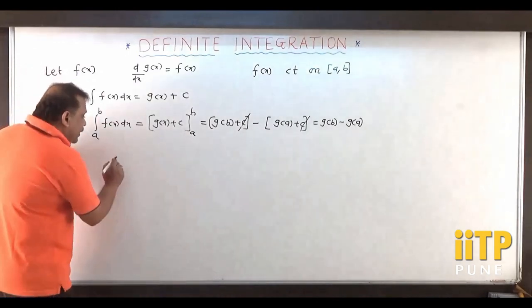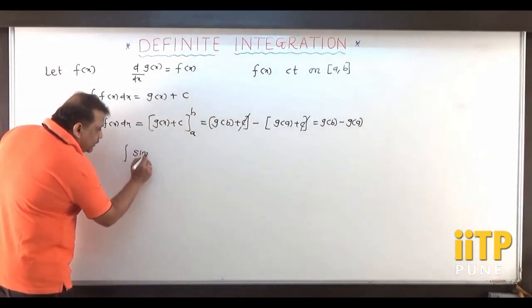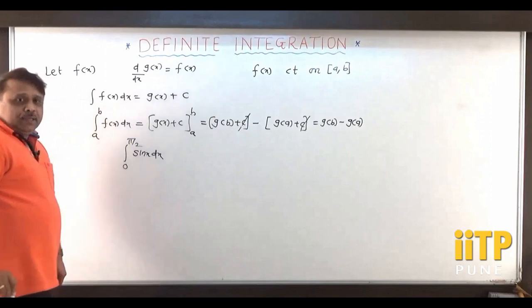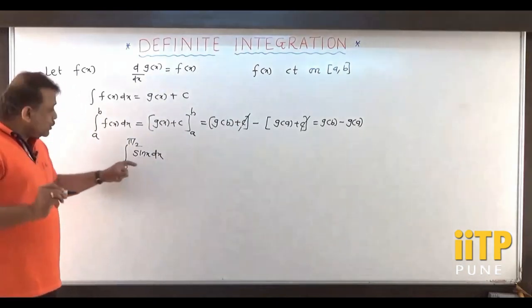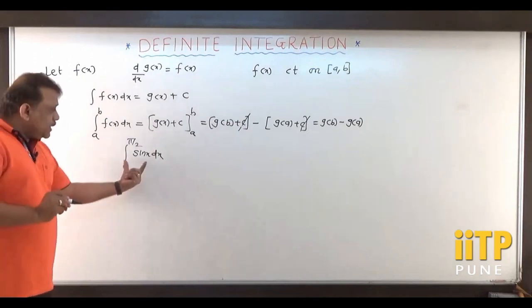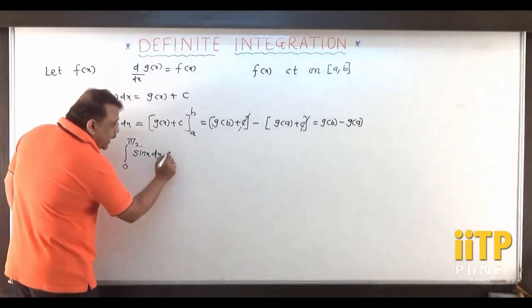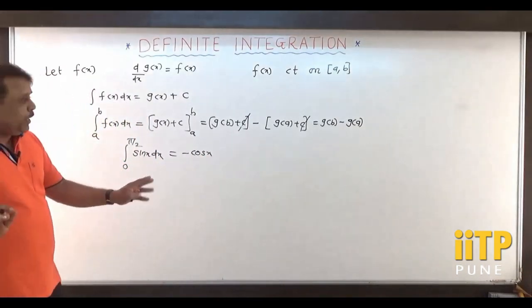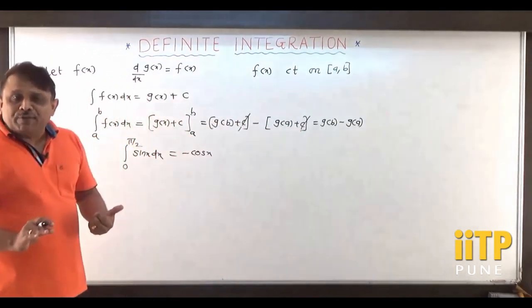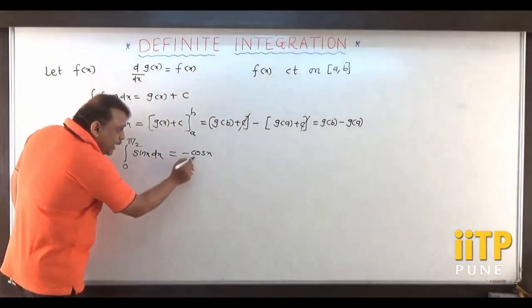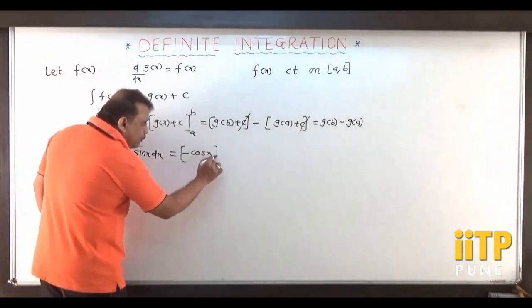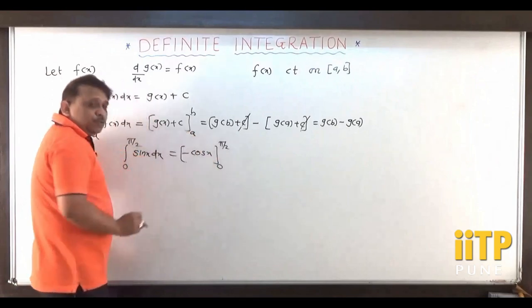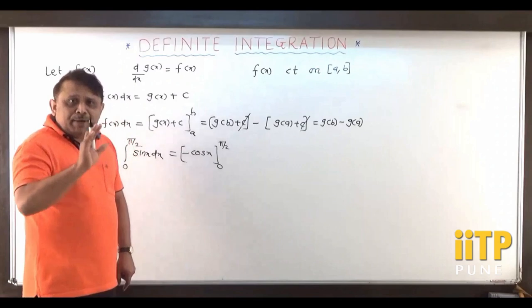For example, suppose I consider the integral of sin x dx from 0 to π/2. We know that sin x is continuous on the closed interval 0 to π/2, so let us evaluate this. We know that the integral of sin x is minus cos x. We will not write c here because the constant of integration gets eliminated. So we write minus cos x and put a bracket with the lower limit 0 and the upper limit π/2.